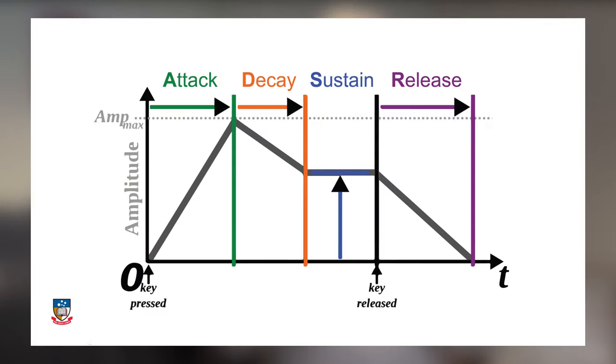Another aspect of the sound of an acoustic instrument is that it changes over time. It begins, carries on for a while and then it ends. Each of these phases of the sound has a particular dynamic shape, which we refer to as Attack, Decay, Sustain and Release — or ADSR for short. Collectively, the overall shape of the sound is known as the envelope.